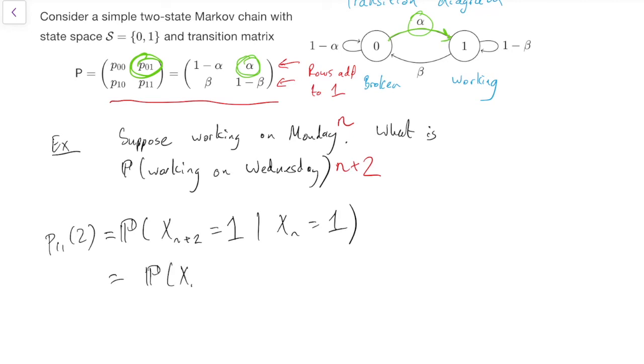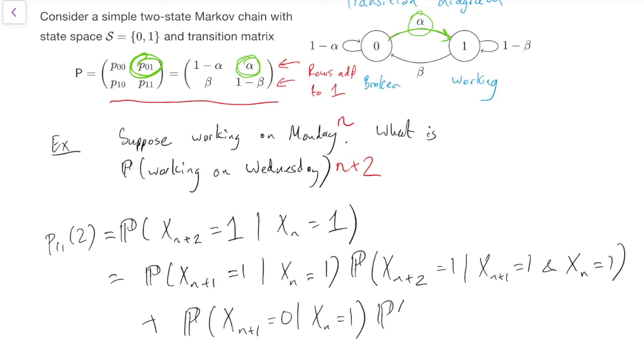In other words, maybe on the first step, we go to X_{n+1} equals 1, in which case, then we'll want to know what's the probability we go to X_{n+2} equals 1, given X_n equals 1, and plus 1 equals 1, and X_n equals 1. Or maybe on that first step, we'll go to X_{n+1} equals 0. Maybe the printer will break. And then we'll want to know the probability that it gets mended the next day.